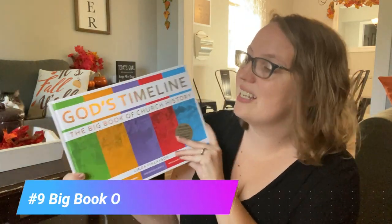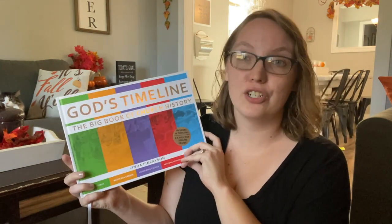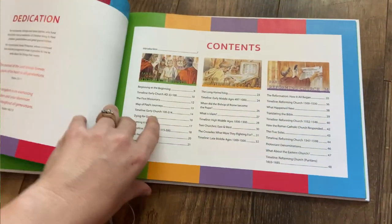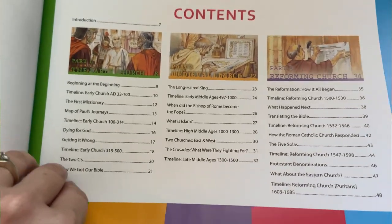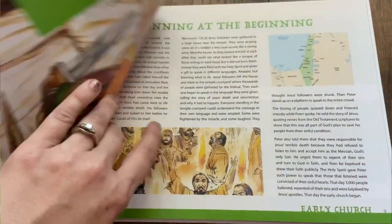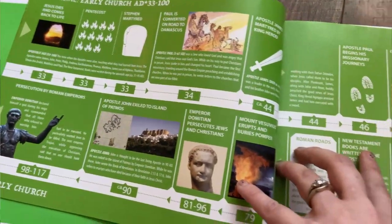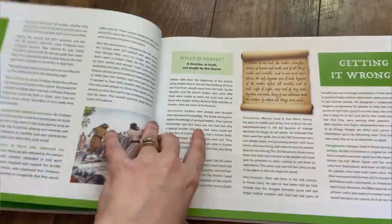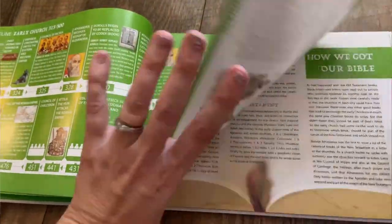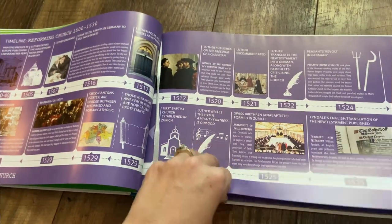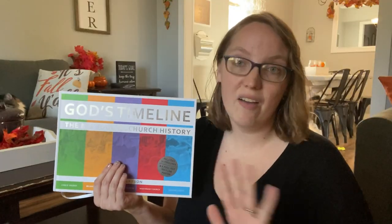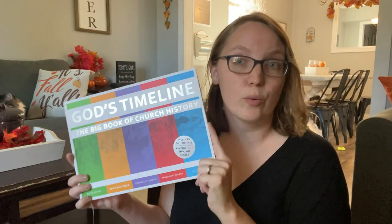Speaking of church history, that brings us to our next resource, which is God's Timeline: The Book of Church History. This is a book I got this summer that I have absolutely loved. It alternates pages of a straight timeline helping you place different people and events in church history, with little blurbs and pictures for each one. Then every other page has additional information — things like the history of the Apostles' Creed, the Nicene Creed, how we got our Bible, what the five solas are, and how the Roman Catholic Church responded. This is a Reformed book put out by Christian Focus Publishing and does not have any images of Christ in it at all.